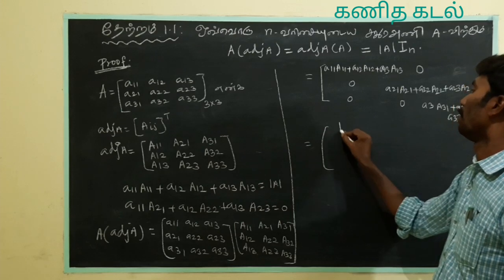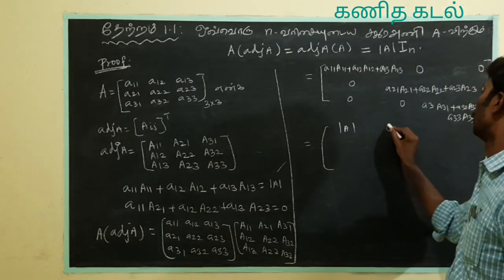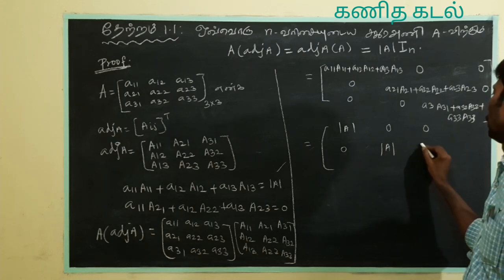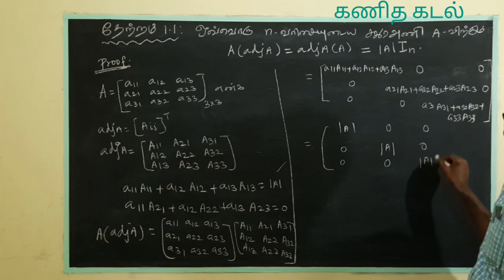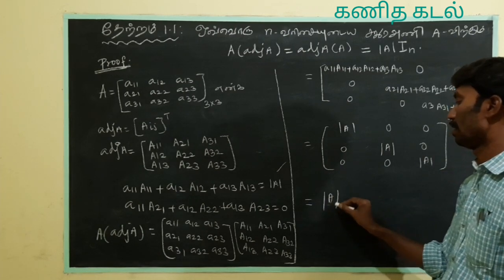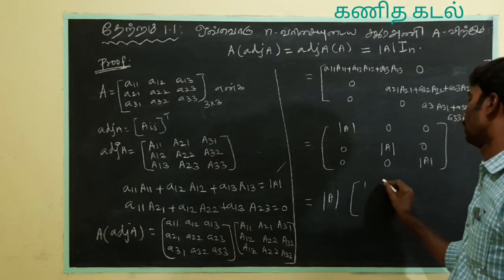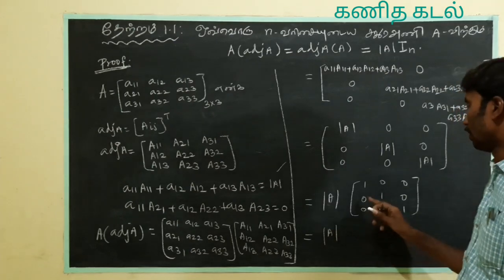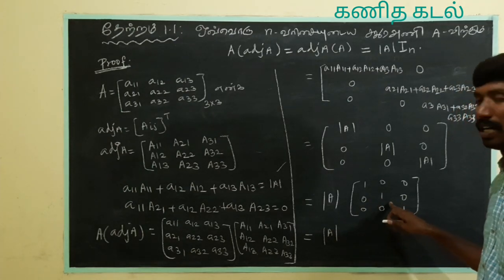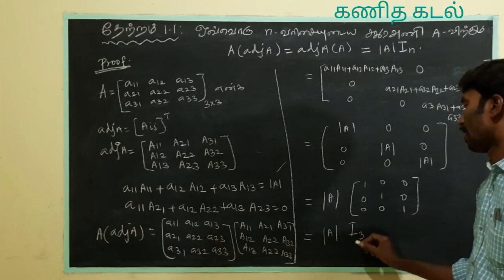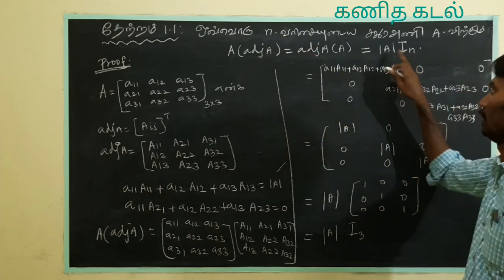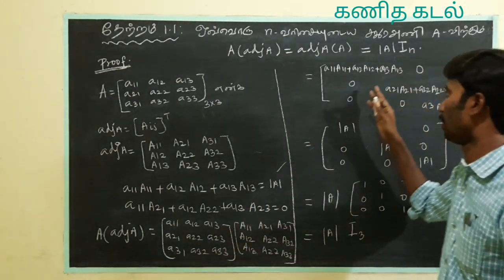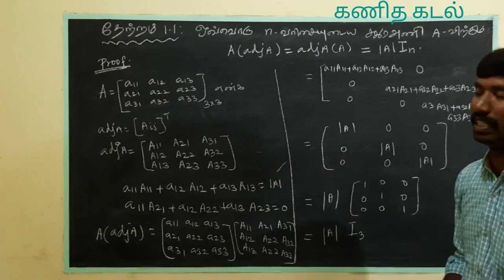Diagonal entries give modulus A. The off-diagonal entries are 0. So this gives modulus A on the diagonal, 0 elsewhere — that is: modulus A times the identity matrix, with 1, 0, 0 / 0, 1, 0 / 0, 0, 1. This is modulus A times I, for a 3 by 3 matrix.